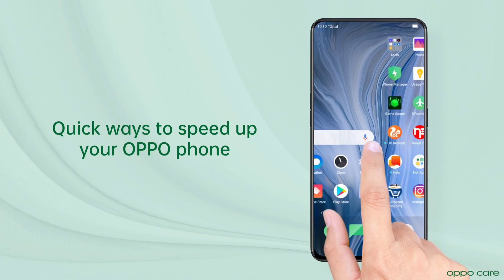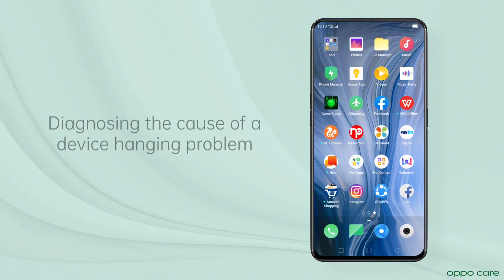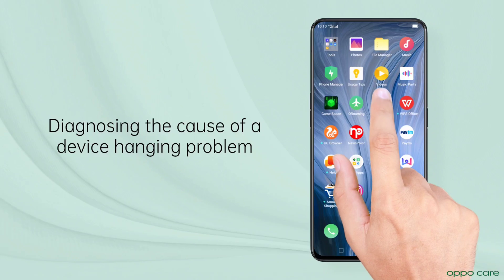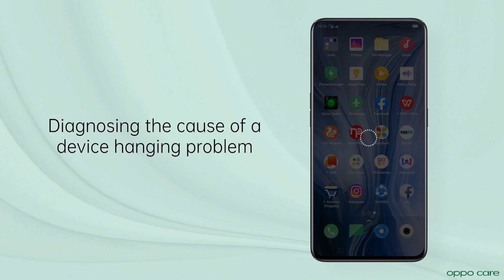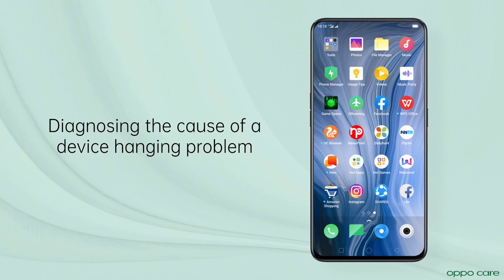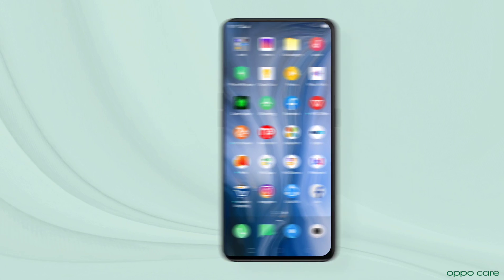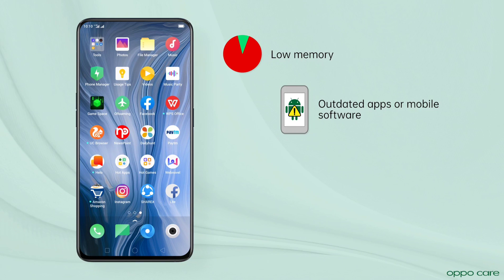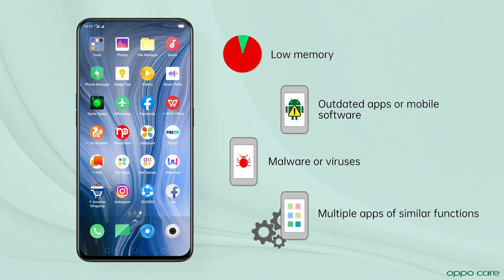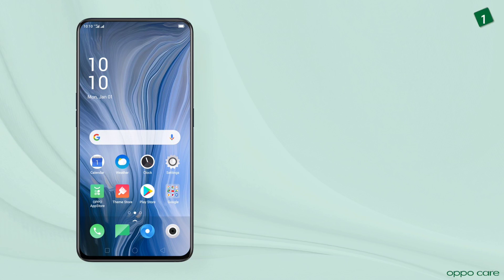Several factors may affect your phone's performance, so let's learn how to speed up your OPPO phone. Usually a device works slow when it has low memory, outdated apps, infected files, or multiple apps of the same function.